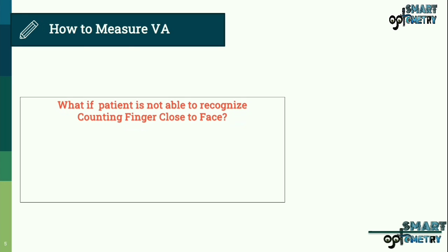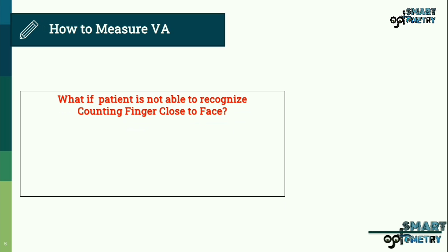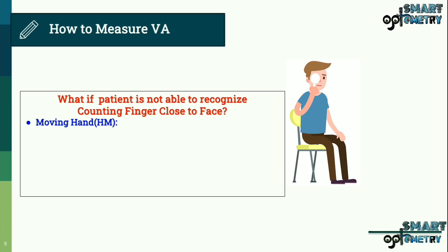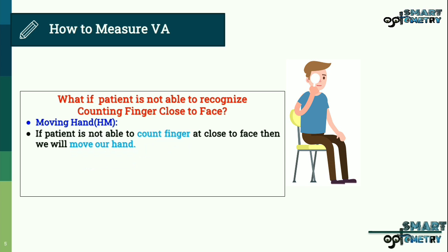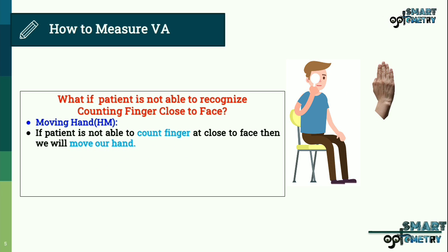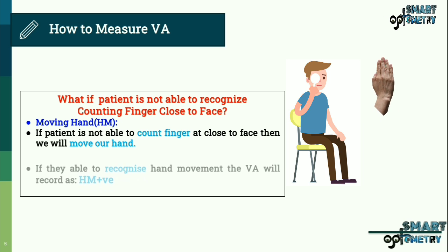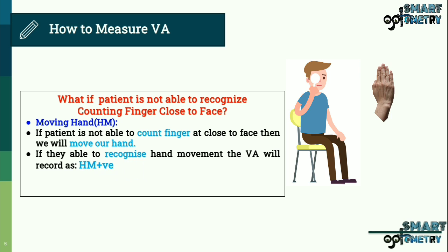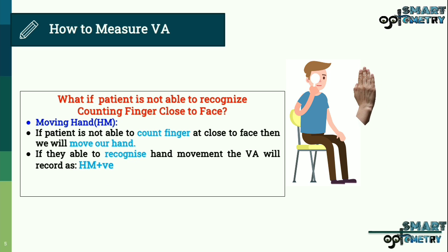What if the patient is not able to recognize counting fingers even close to the face? The next step is the hand movement test. We move our hand in front of the patient, and if they are able to recognize the hand movement, visual acuity is recorded as hand movement (HM) positive.